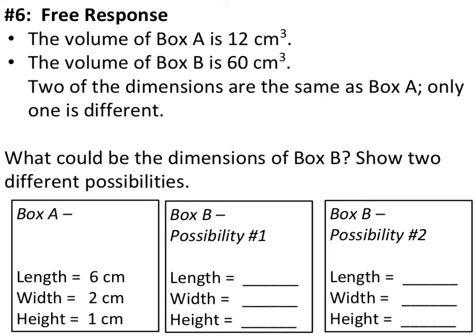Our last example says the volume of box A is 12 centimeters cubed and the volume of box B is 60 centimeters cubed. Two dimensions are the same as box A; only one is different. Since 60 is 5 times 12, one dimension must be 5 times greater. Your answers may differ, but as long as one of the dimensions is five times greater than the corresponding dimension of box A, the problem is solved correctly.